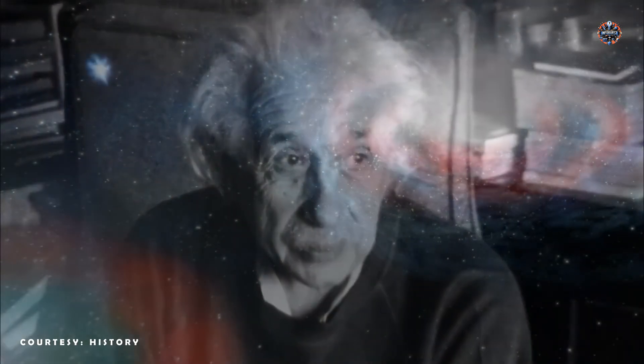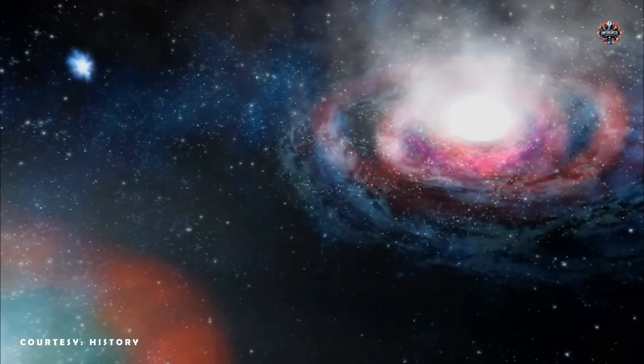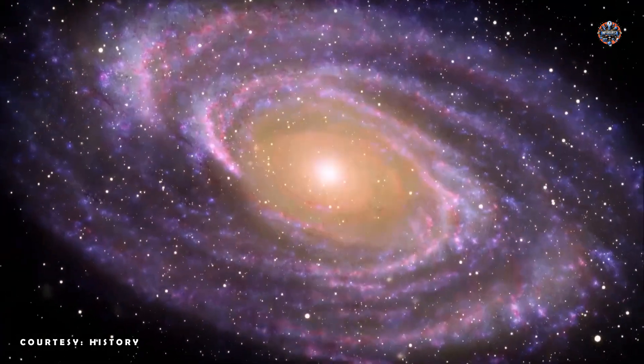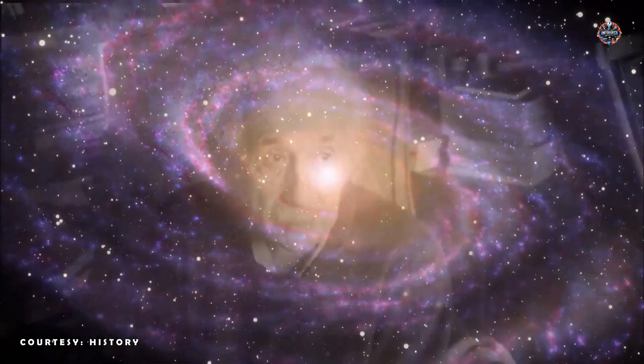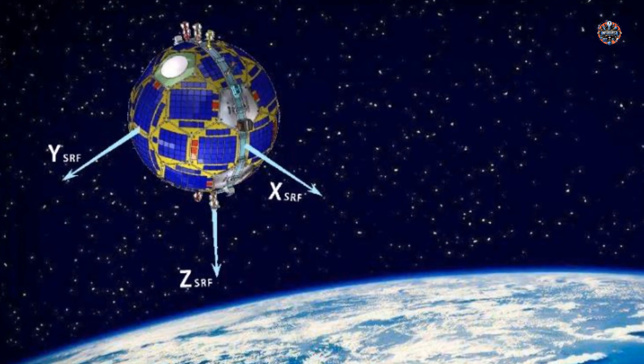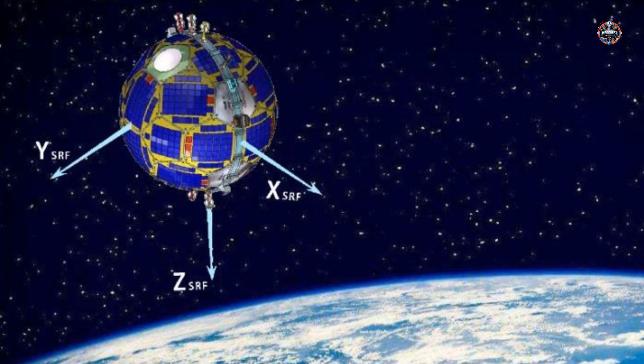Einstein's general theory of relativity further expands on the concept by explaining how gravity influences time. The stronger the gravitational field, the slower time passes. This effect, known as gravitational time dilation, means that time runs slower near massive objects like stars or black holes. For instance, if you were to spend time near the surface of a neutron star, time would pass more slowly for you compared to someone far away from such a massive gravitational source.